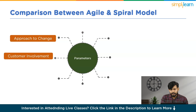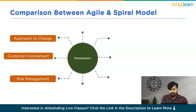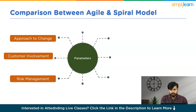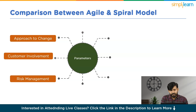The third parameter is Risk Management. The Agile model takes a more adaptive and iterative approach to risk management. Rather than having a specific phase dedicated to risk analysis, Agile teams continuously assess and respond to risks throughout the development lifecycle, identifying potential risks early and addressing them in subsequent iterations. The Spiral model, by contrast, is explicitly designed with a focus on risk management. The risk analysis phase in each iteration involves systematic evaluation of potential risks and development of mitigation strategies, contributing to the reliability and robustness of the final product.